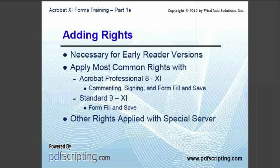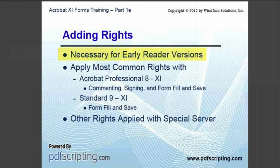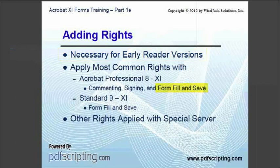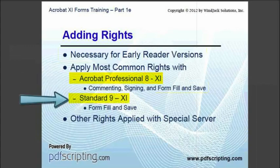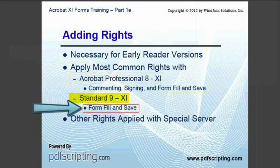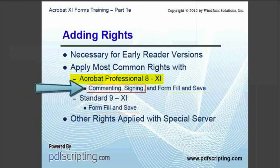However, in most cases you won't know what version of Reader your form is being used on, so it's a good idea to know how to apply Reader writes if you think you'll need it. The important writes for us are the form fill and save writes. These can be applied in Acrobat Professional versions 8 through 11, or in Acrobat Standard versions 9 through 11. Standard is limited to only applying form writes, whereas Acrobat Professional also applies commenting and signing writes.